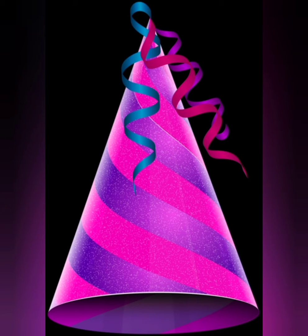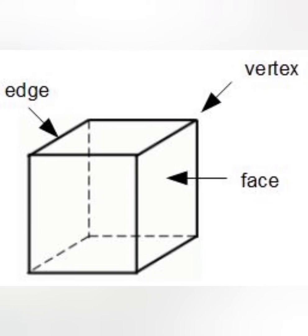What is a face? Face is the surface. The plain surface of the solid object is called its face. Where the two faces meet, there forms an edge. And where the two edges meet, there forms a corner.